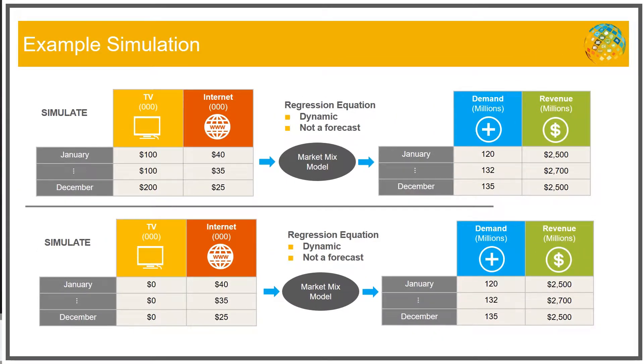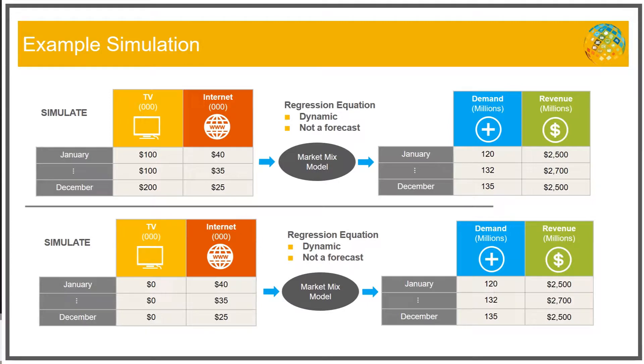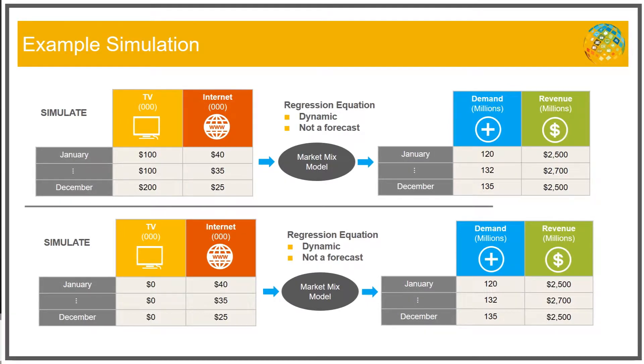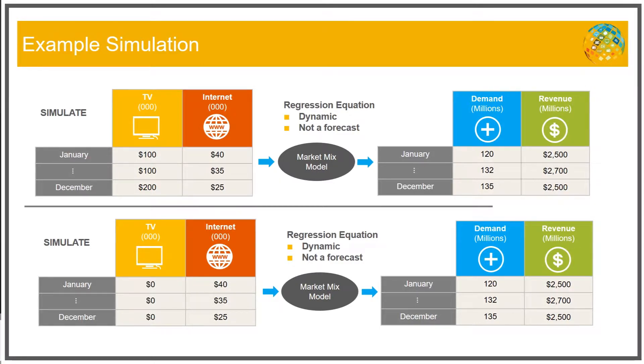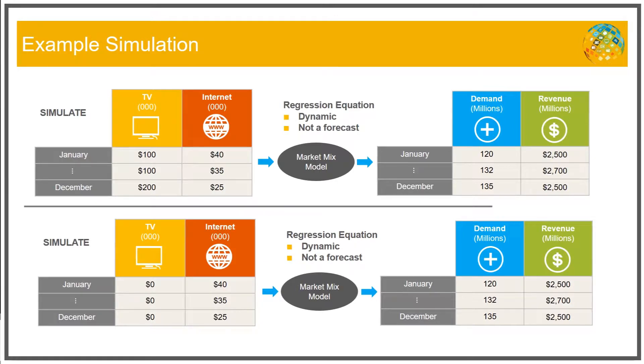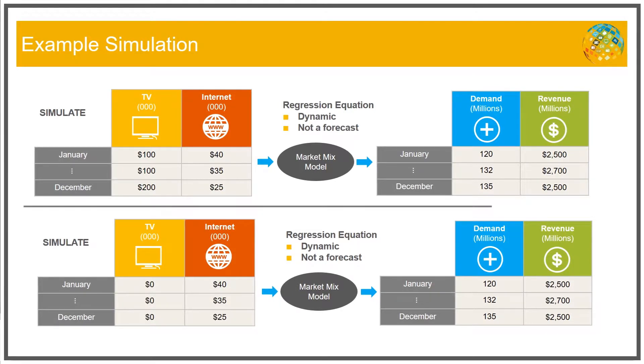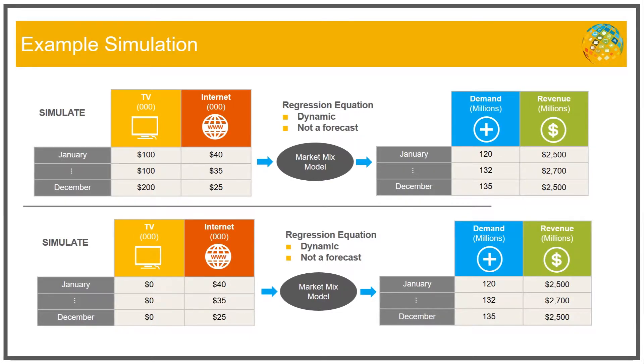And this equation is embedded into a simulation program, where the inputs are actual dollars spent on media, different types of media, and the dollars are divided by the cost of media. For example, TV, amount spent on TV advertising dollars could be divided by the cost of TV GRPs. And it's converted to units, and then the units are input into the equation, and we simulate the output, which produces units of products sold.